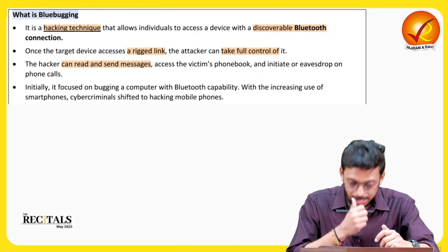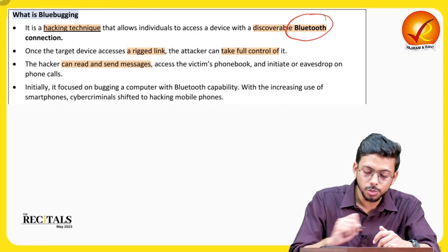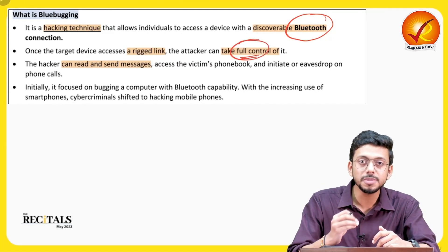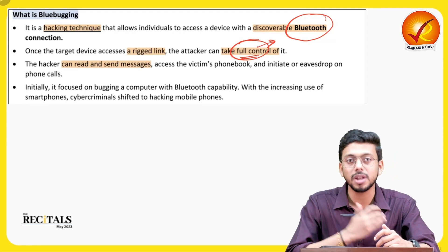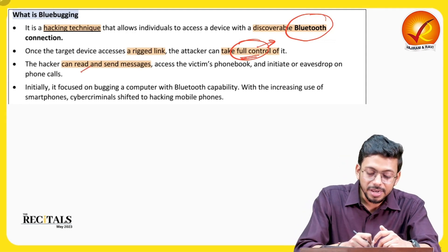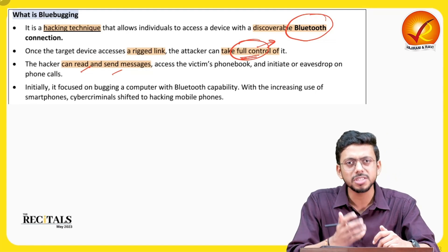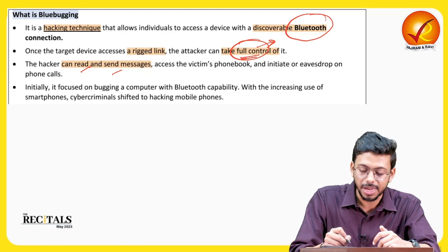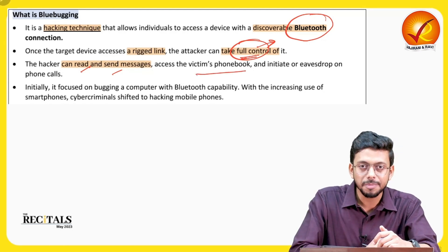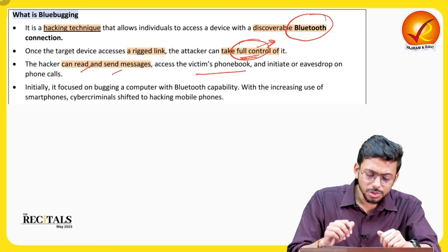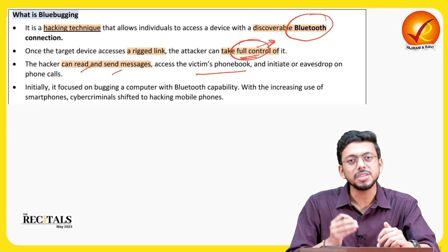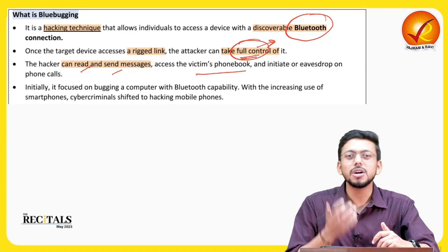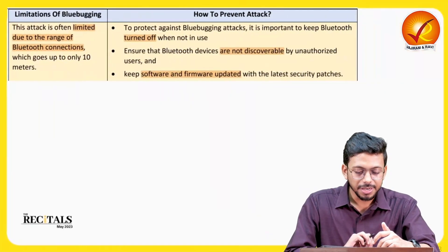In blue bugging, you hack a device with the help of Bluetooth and can take full control of the other person's mobile phone, laptop, or tablet. You can read and send messages; all private stuff — passwords, photos, documents — can be accessed and stolen. The victim's phone book can also be accessed. These kinds of attacks are increasing because we have a lot of smartphones and smart devices around us with Bluetooth, making them vulnerable.